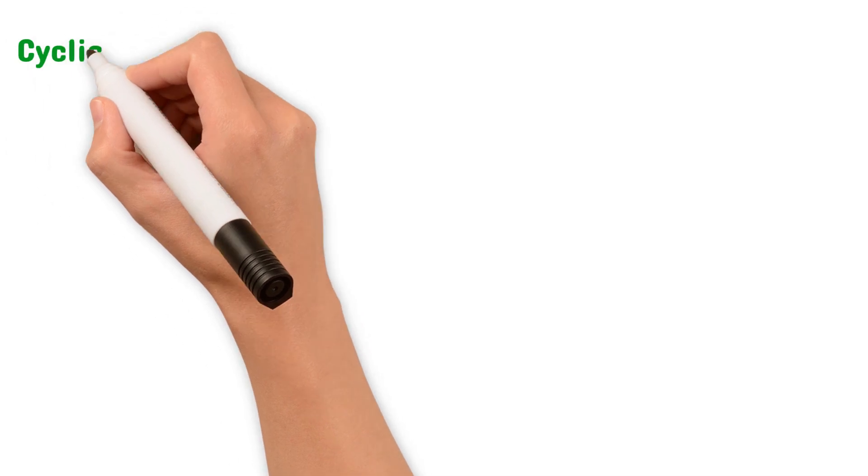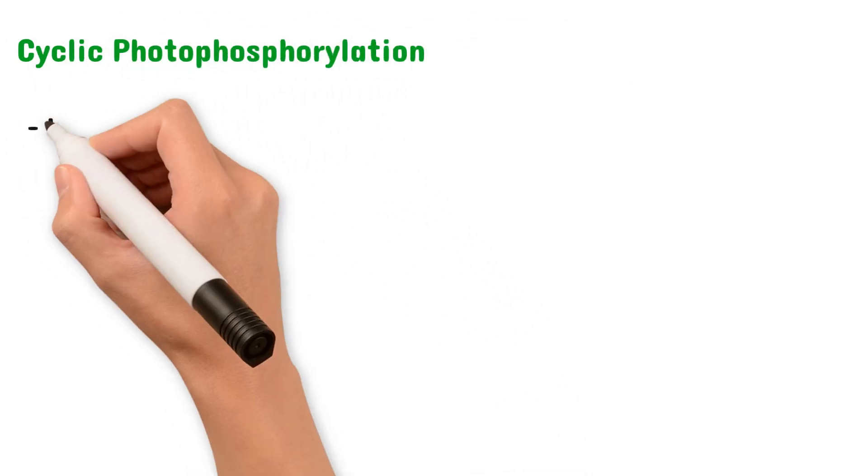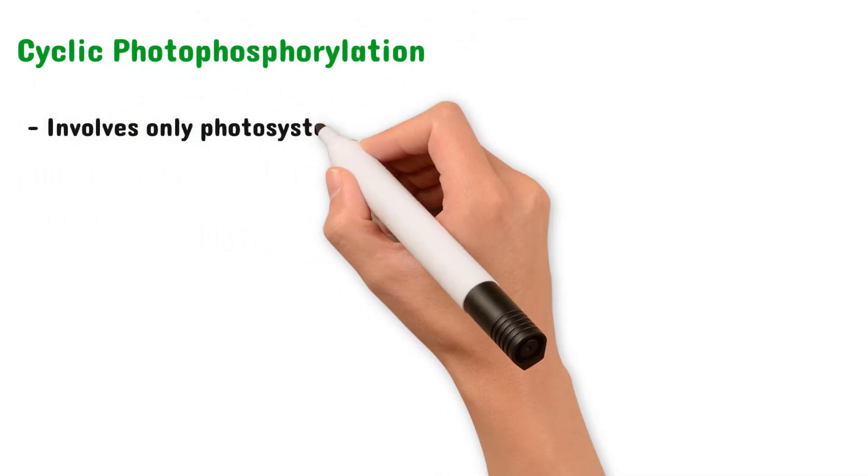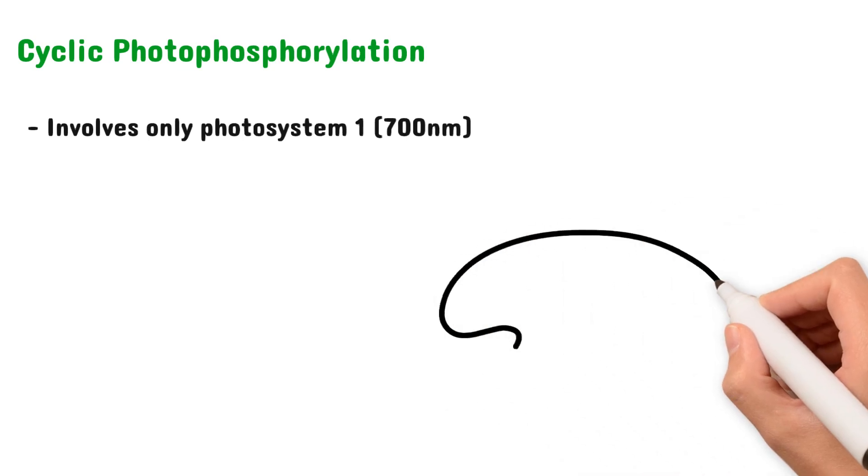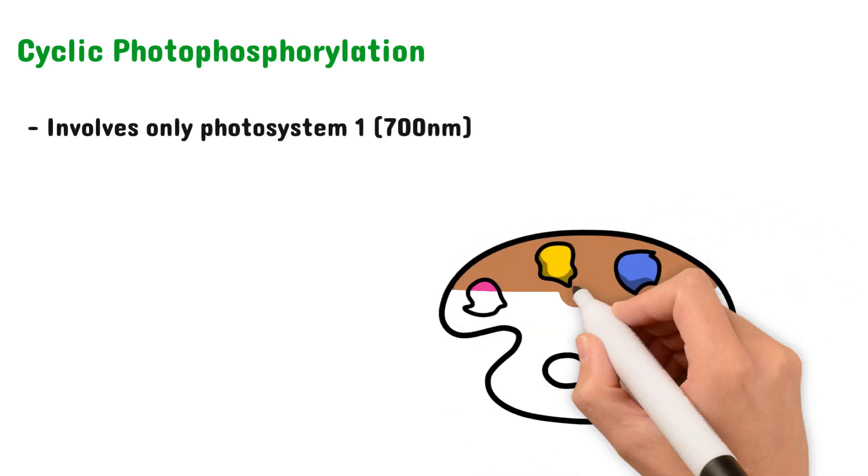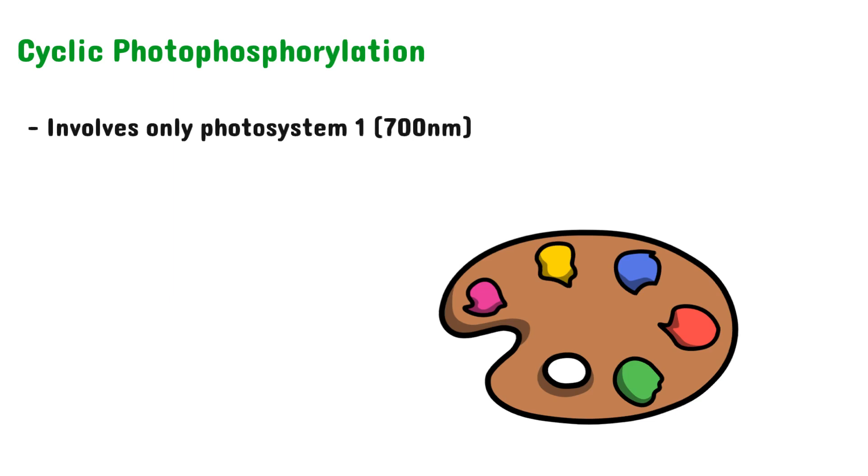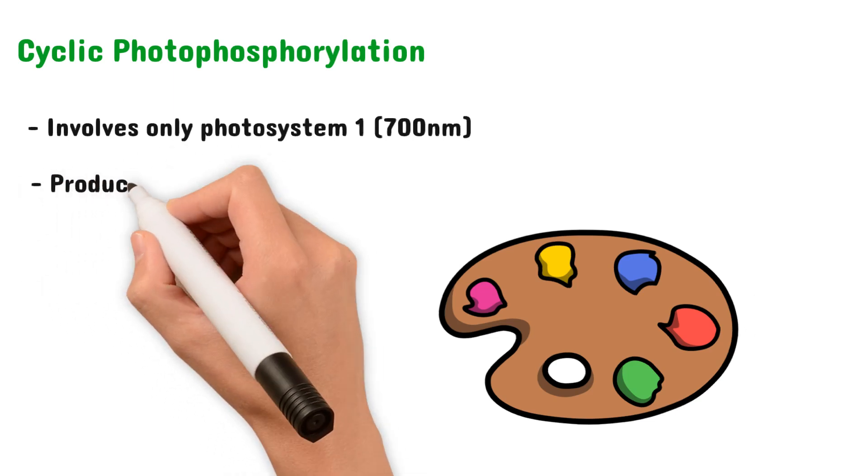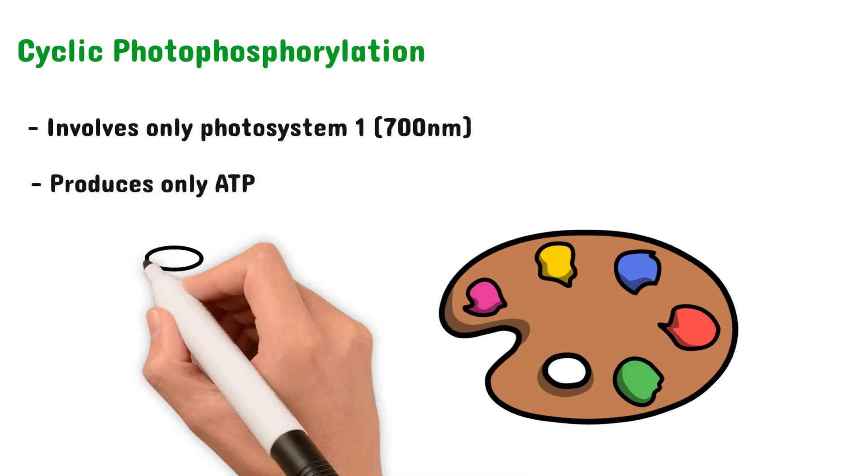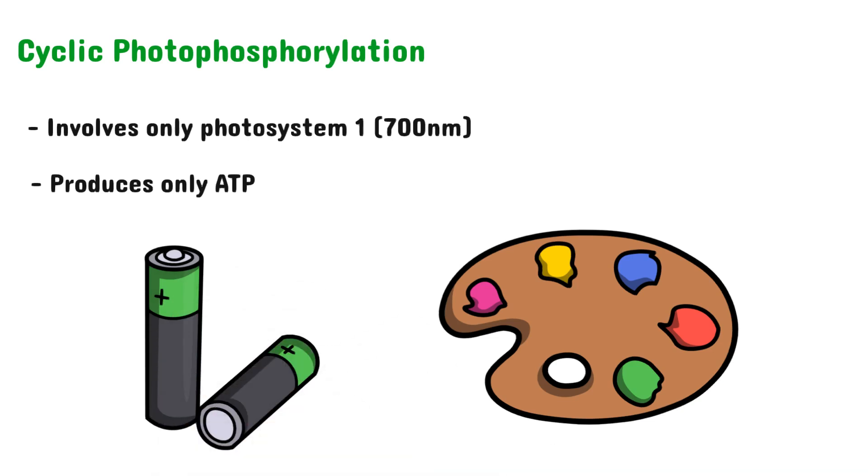We will start by looking at cyclic photophosphorylation. This stage involves only photosystem I. Remember that photosystem I is a combination of pigments that absorb light with wavelengths 700 nanometers. And this stage only produces ATP. But we'll go through it step by step.